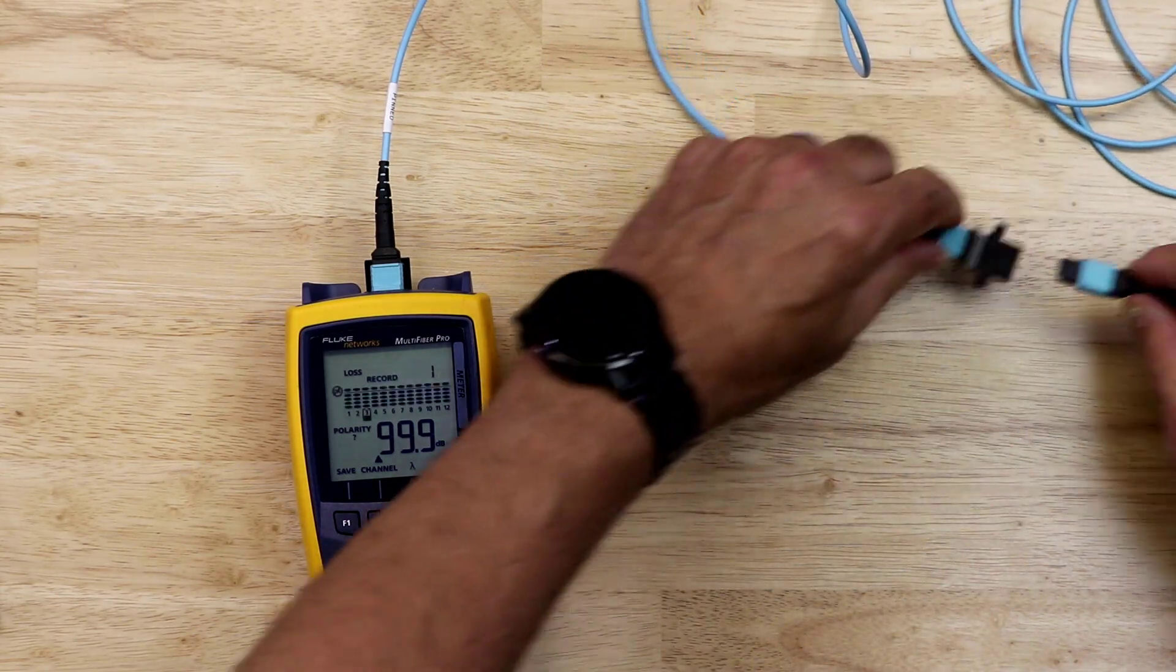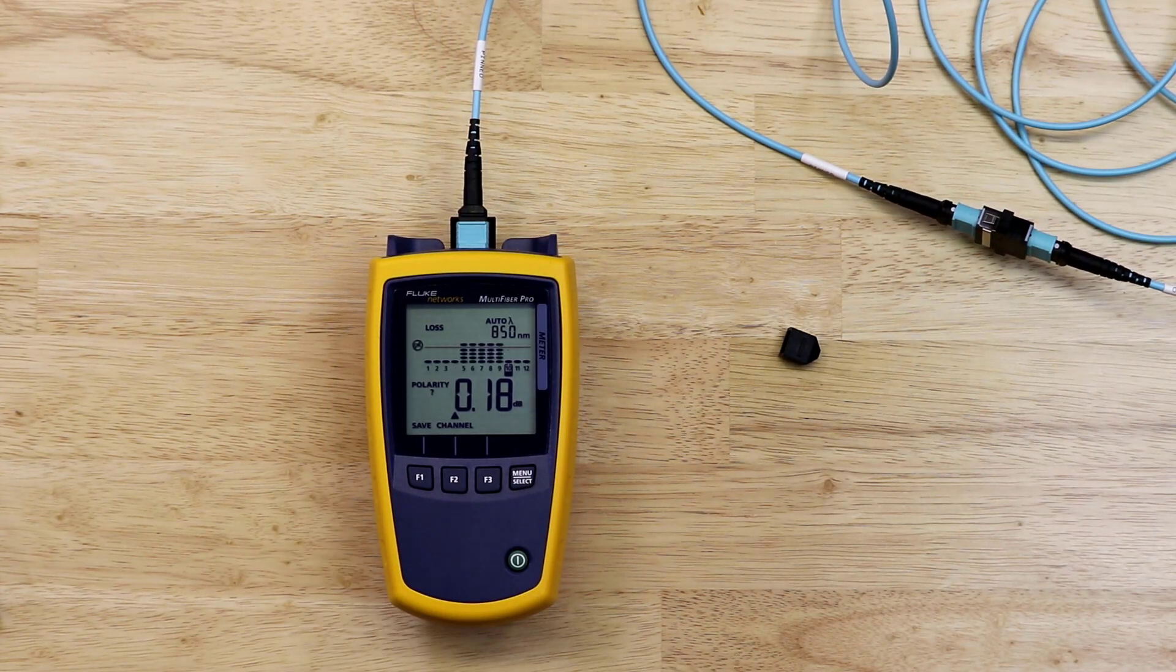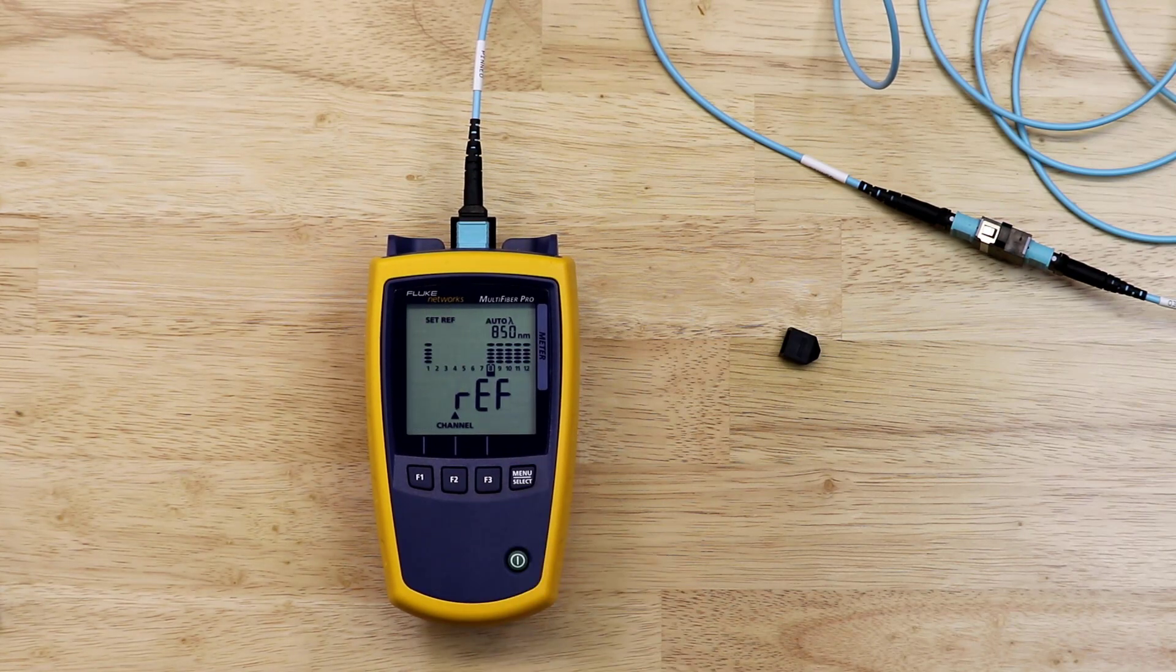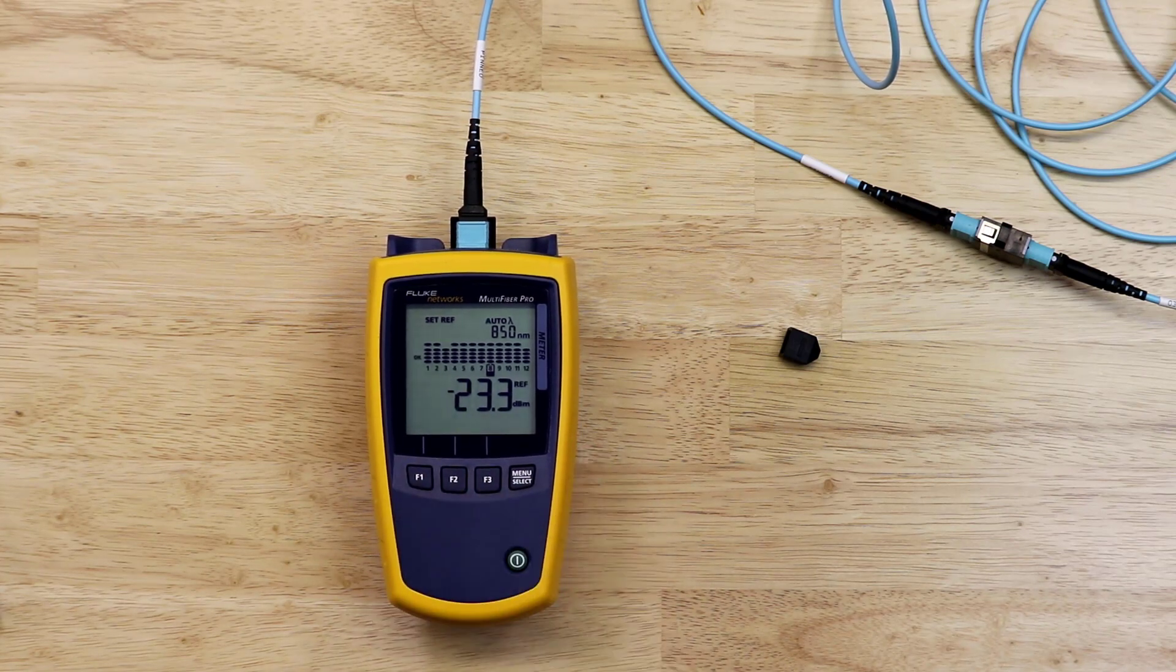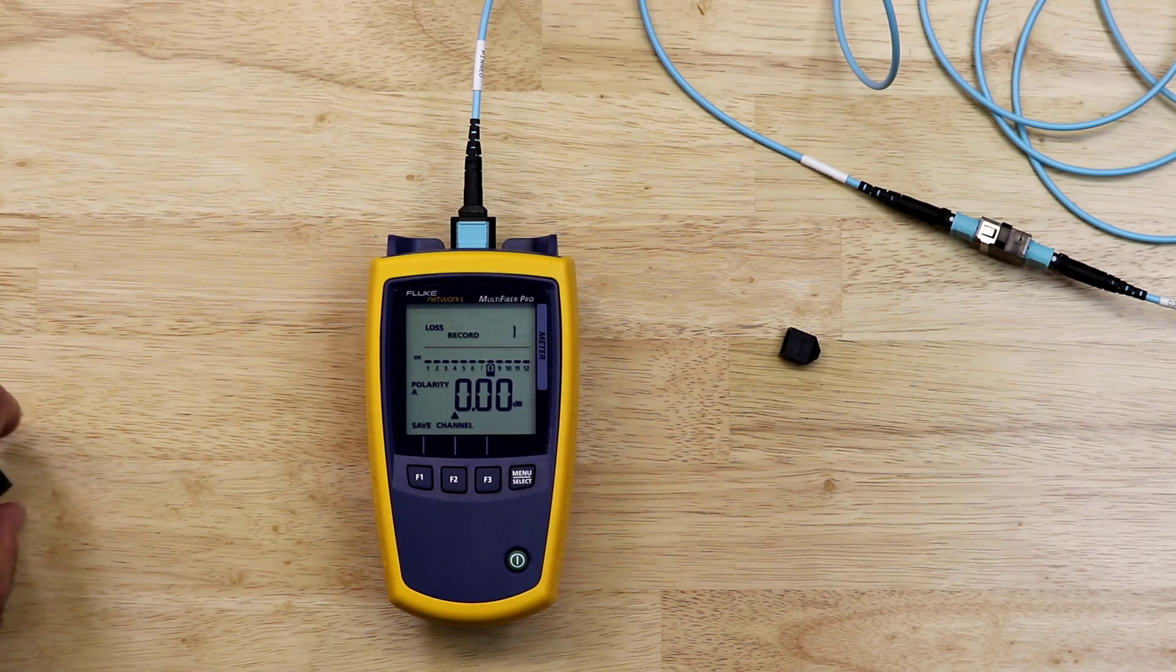After the meter has had a chance to scan all of the channels, I will make sure the loss does not exceed 0.35 dB for any of the channels. If it does, this could indicate that I have a bad test cable or the end faces are dirty. I would need to inspect the end faces. If they're good, I will need to replace the pinned to unpinned test cable. If all the loss values are less than 0.35 dB, I press the menu select button until I see set reference on the screen. Referencing will begin automatically. After the referencing process is complete, I will press save to zero out my measurements and save the second reference. I have now referenced out both of my test cables.